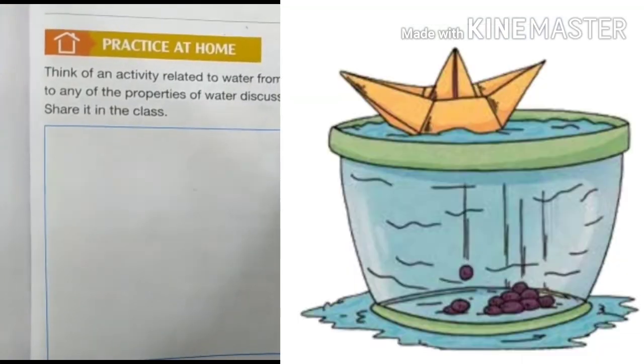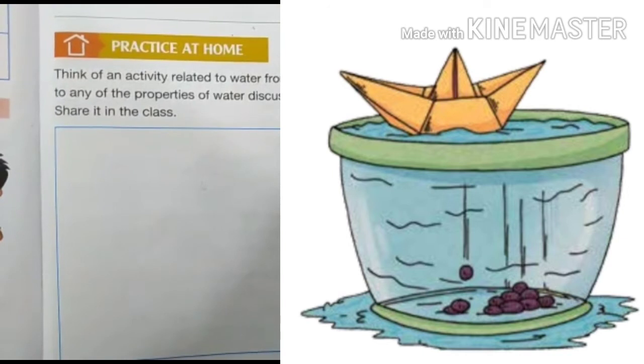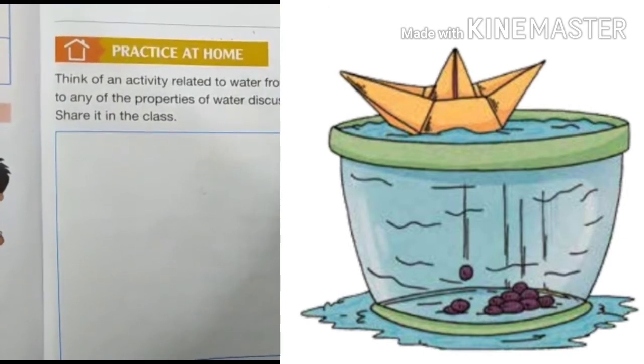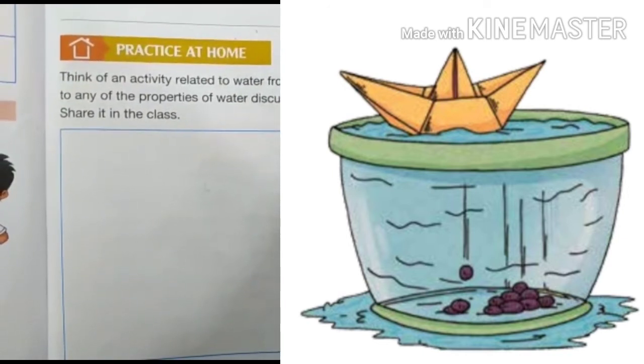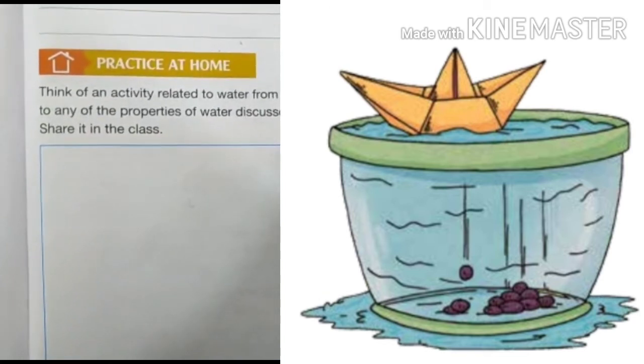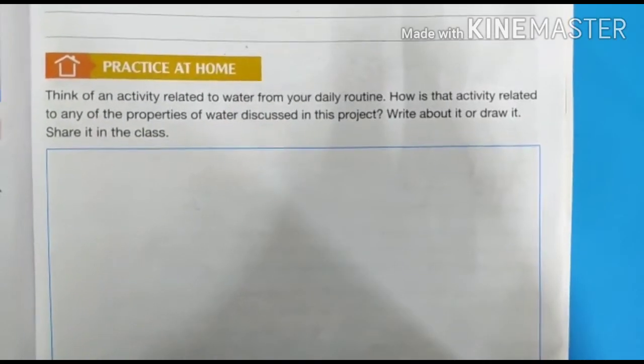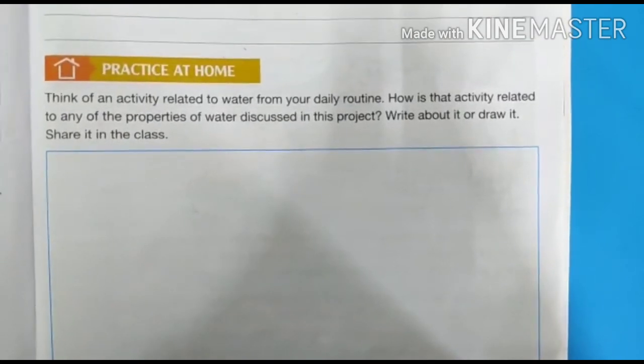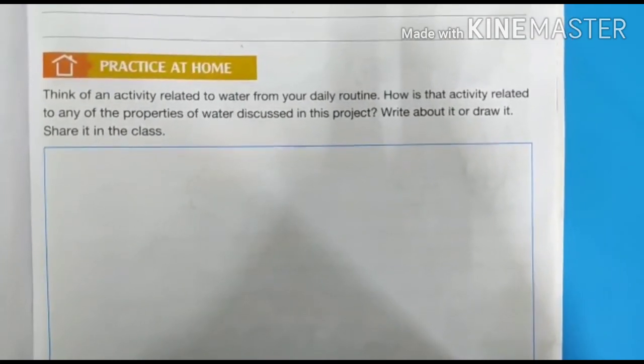Also you can draw here a tub of water in which a paper boat is floating and some stones below the surface of the tub. It shows heavy things sink and light things float on water. In this way, draw pictures here and complete it.